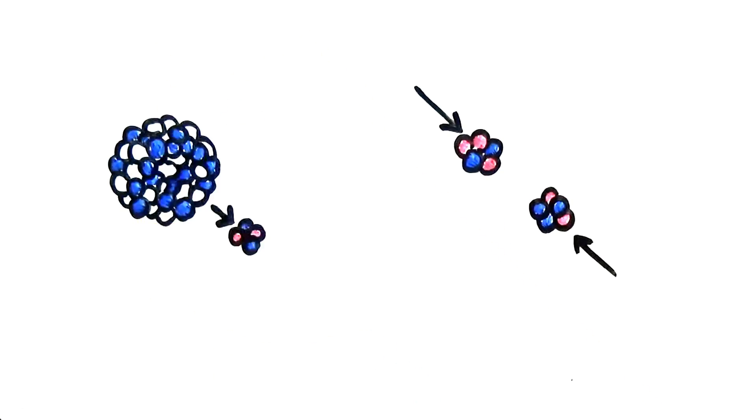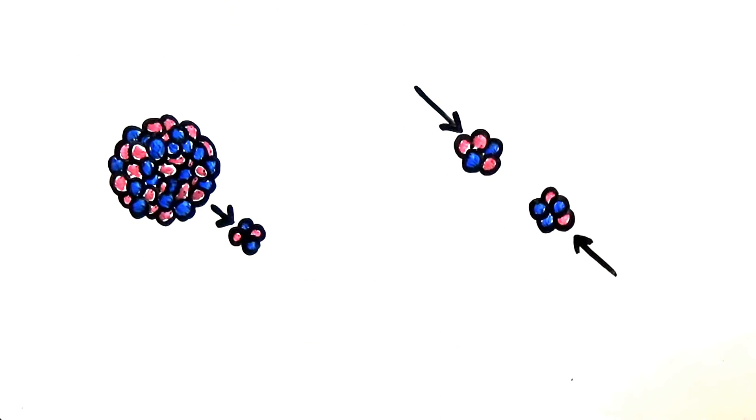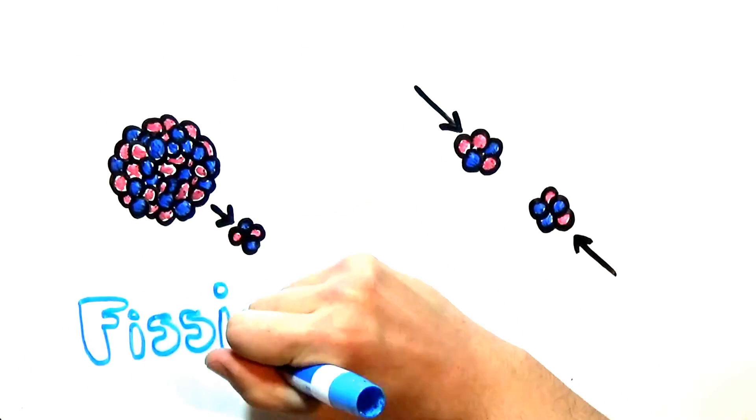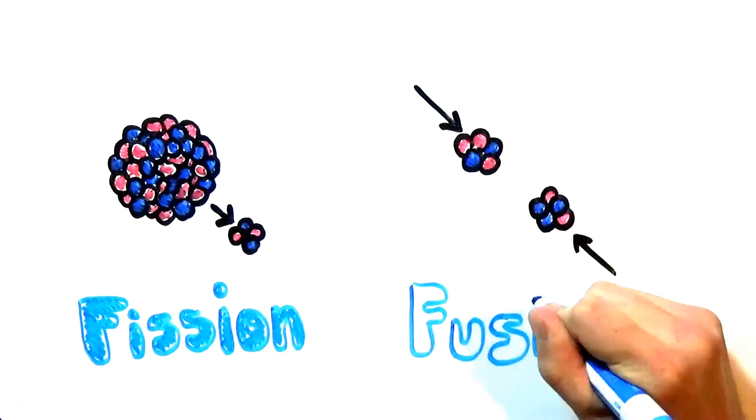Thermonuclear bombs are much more destructive than the bombs created in the cold war era, and they use both fission and fusion to do so, but it seems sort of counterintuitive. Why can fission, which breaks atoms apart, and fusion, which joins atoms, both generate energy?